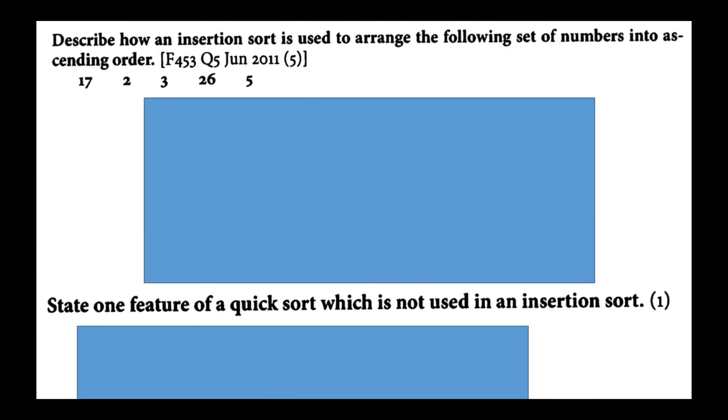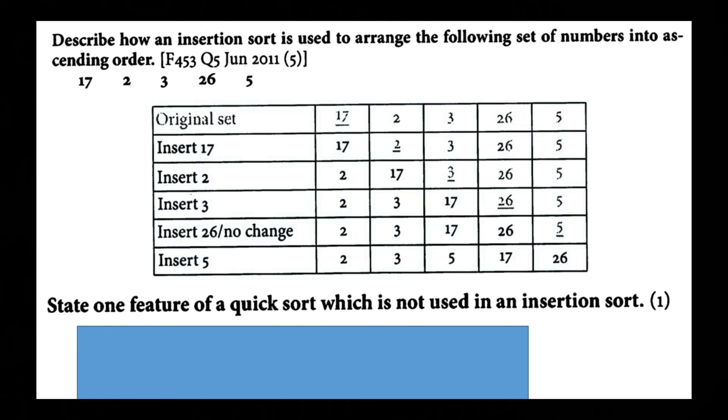Describe how an insertion sort is used to arrange the following set of numbers into ascending order. 17, 2, 3, 26 and 5. So here we go. Original set. So 17. That is the first number and we go to order them into the correct order. So insert 17. Then insert 2. Then you insert 3 into the correct order. Insert 26 since that is no change. Then insert 5. So insertion sort is just going to that location insertion saying looking at lists saying what goes in this location in this correct order. So from lowest to highest.